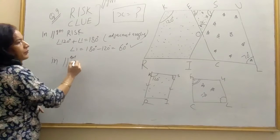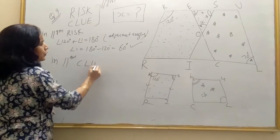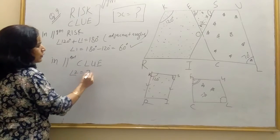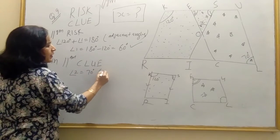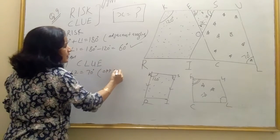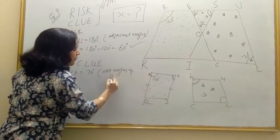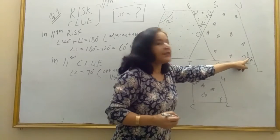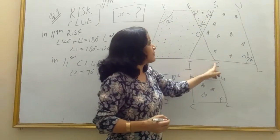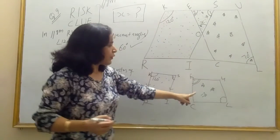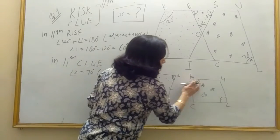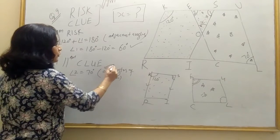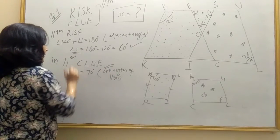So in parallelogram C-L-U-E, angle 2 is equal to 70 degree. The opposite angles of parallelogram C-U-E, like this. These are opposite angles. Now you find angle 2, angle 1 already, angle 2.